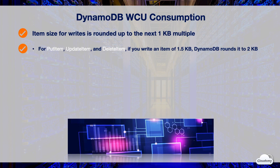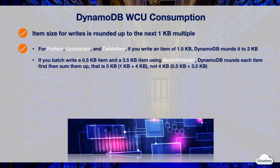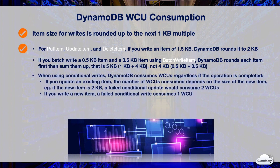For BatchWriteItem requests, DynamoDB first rounds up each item and then sums the rounded values. For example, batch writing a 500-byte item and a 3.5 KB item gives a total of 5 KB (sum of rounded values: 1 + 4), not 4 KB. When you use conditional writes, DynamoDB consumes WCUs regardless of whether the operation succeeds. If you update an existing item, the WCUs consumed depend on the size of the new item — for example, a failed conditional update or delete on a 2 KB item consumes two WCUs. If you write a new item, a failed conditional write consumes one WCU.